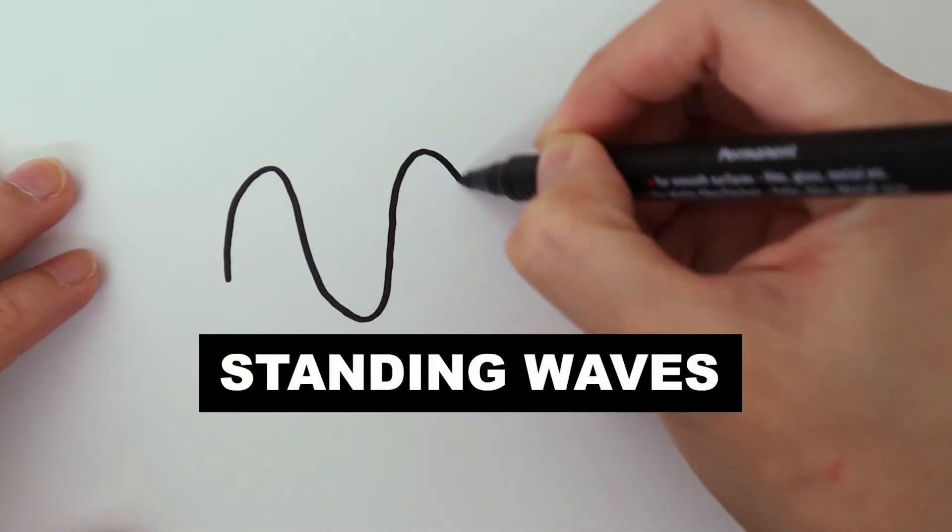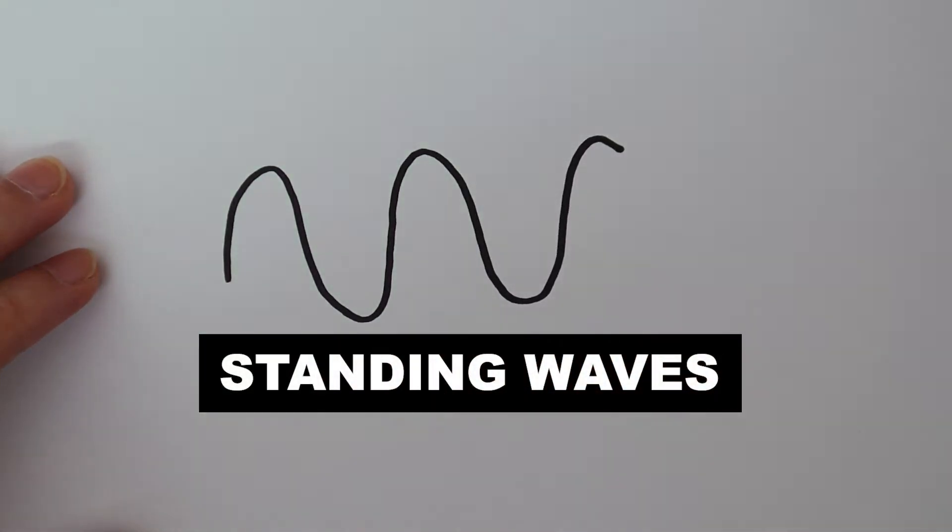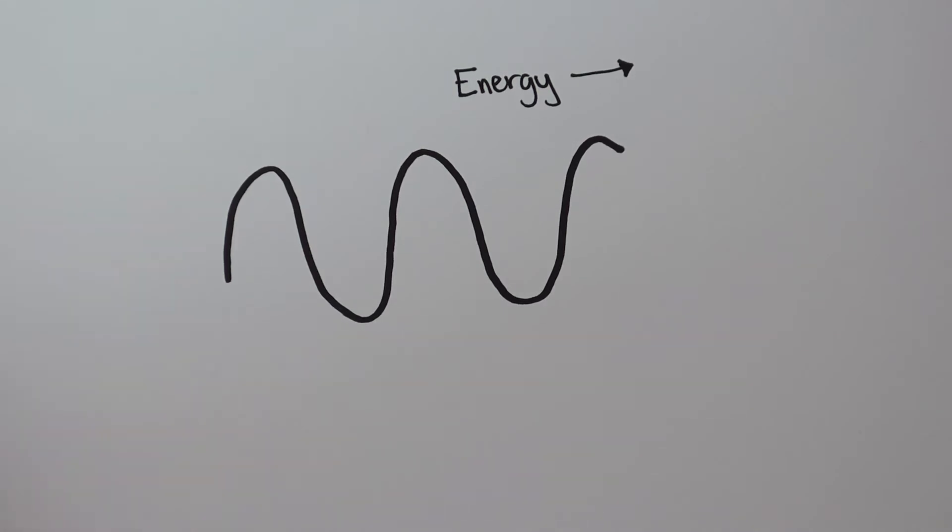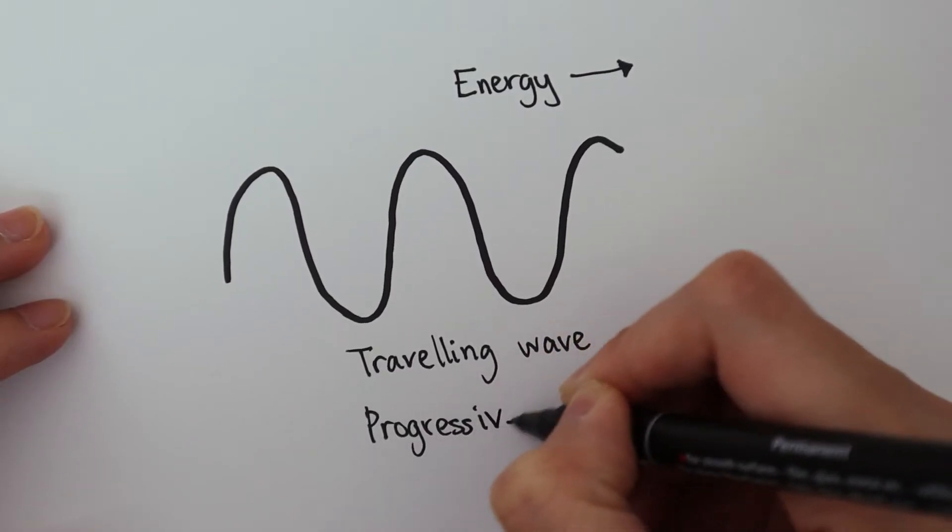A wave source emits a wave that propagates through space to freely transmit energy. We call this kind of wave a traveling wave or a progressive wave.